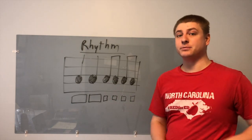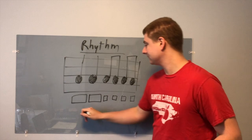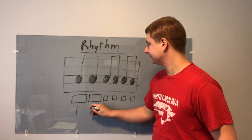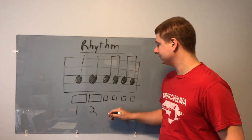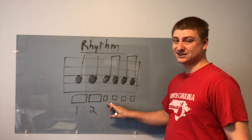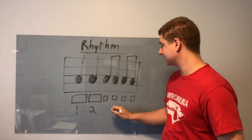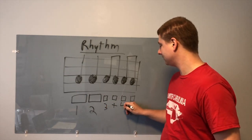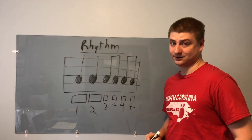Let's put some numbers to these rhythms. We have one, two, and then these guys get split into little parts. Three, and, four, and.